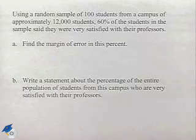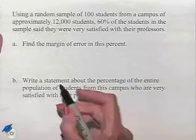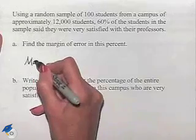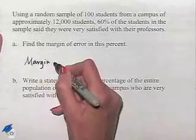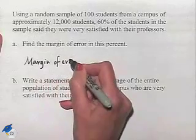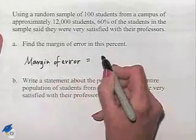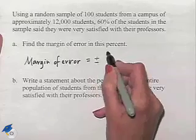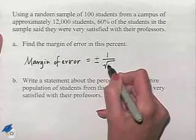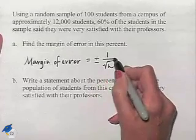Part A, find the margin of error in this percent. To find the margin of error, we want to use the formula, which is going to be equal to plus or minus 1 divided by the square root of n, where n is the number in the sample.